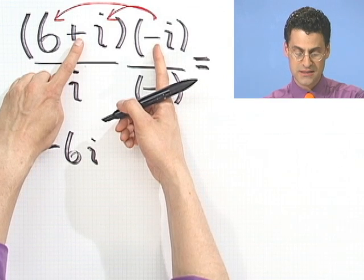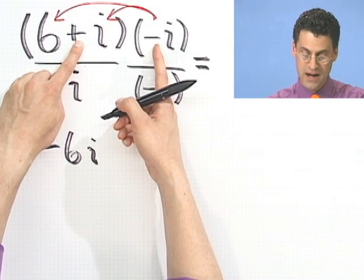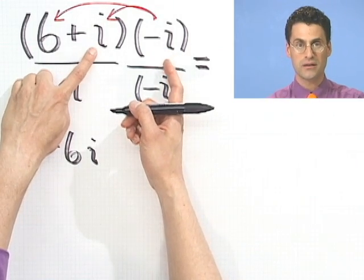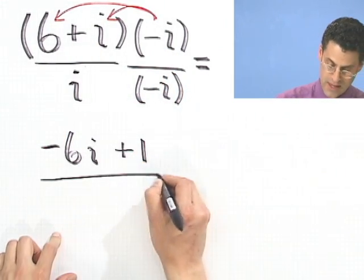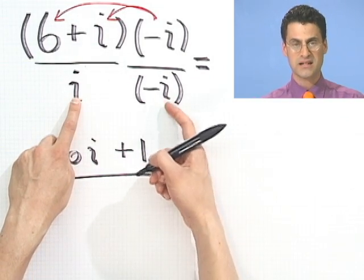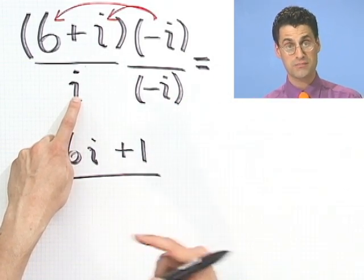And then, let's see, a minus and a plus is a minus i squared. So a minus i squared is a minus minus 1, which is a plus 1. And on the bottom, I'm left with an i times an i. That's i squared. So that's minus i squared. But minus i squared is minus minus 1, which is 1.